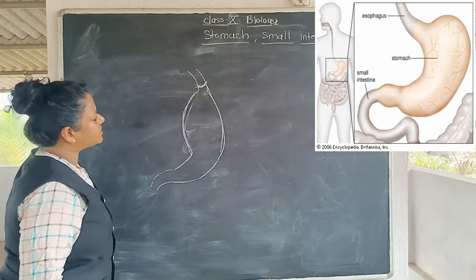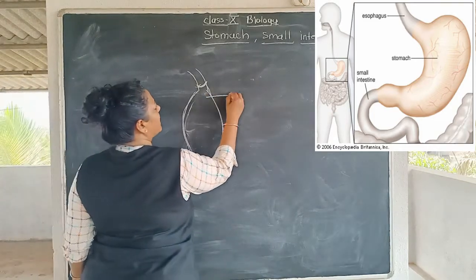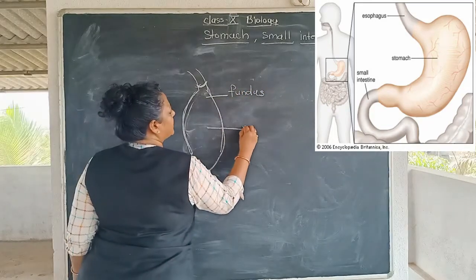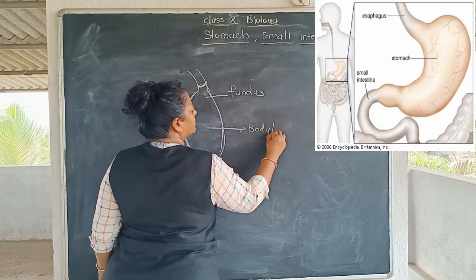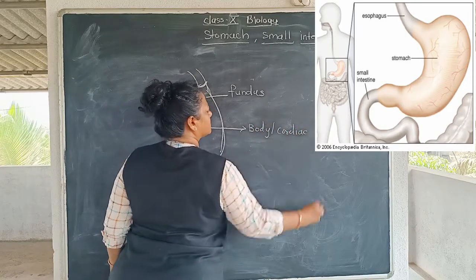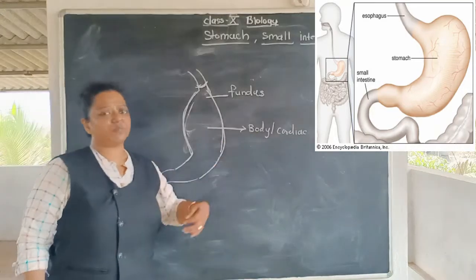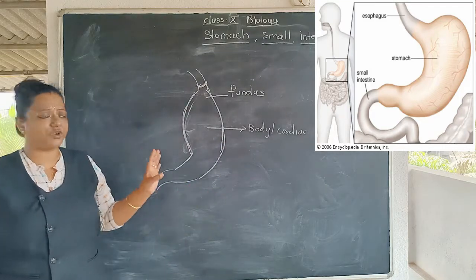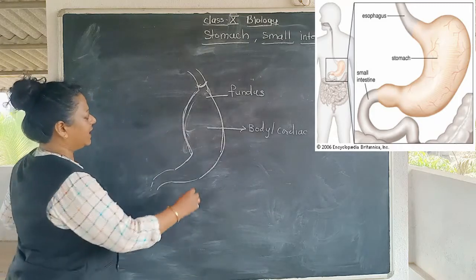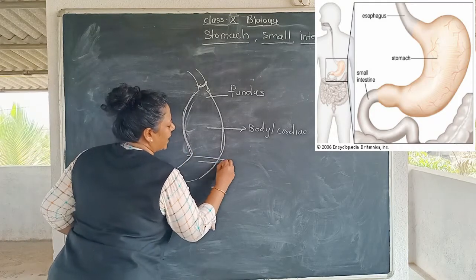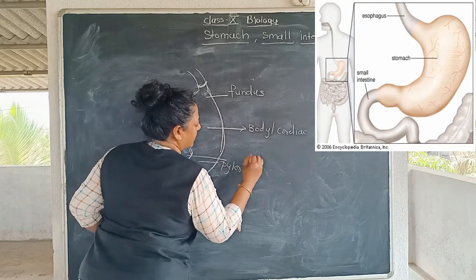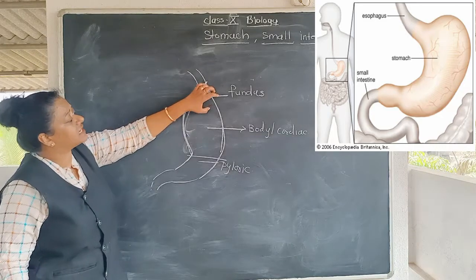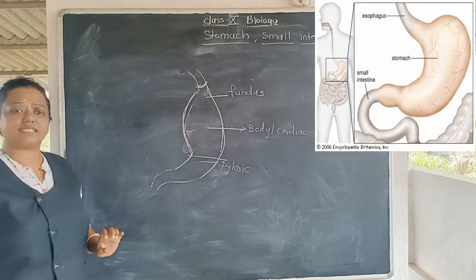If we talk about the parts of the stomach, the stomach has three parts. The first part is called the fundus. The middle part is called the body, or cardiac — named because it is near the heart, as the stomach is on the left side of the body. The end part is called the pyloric.